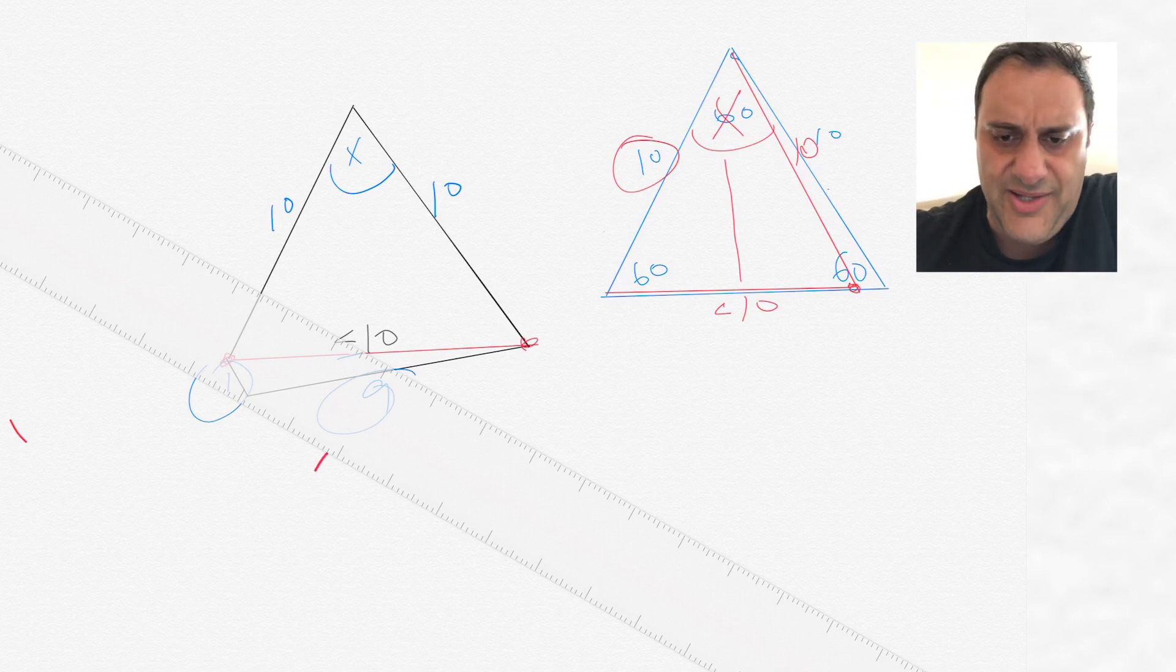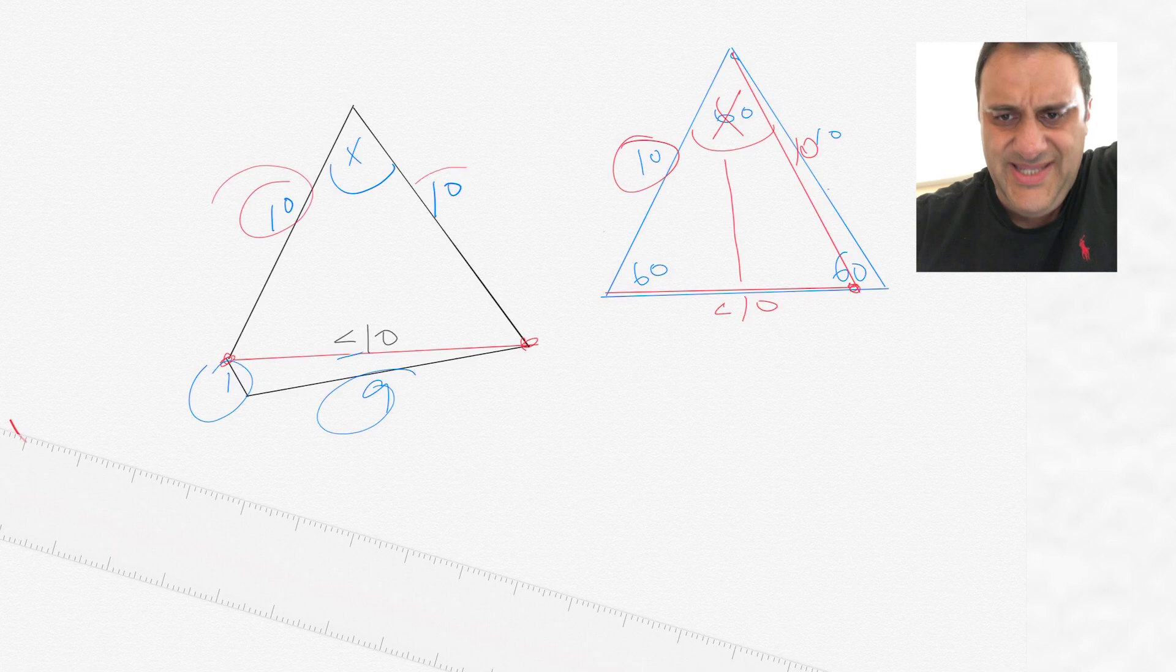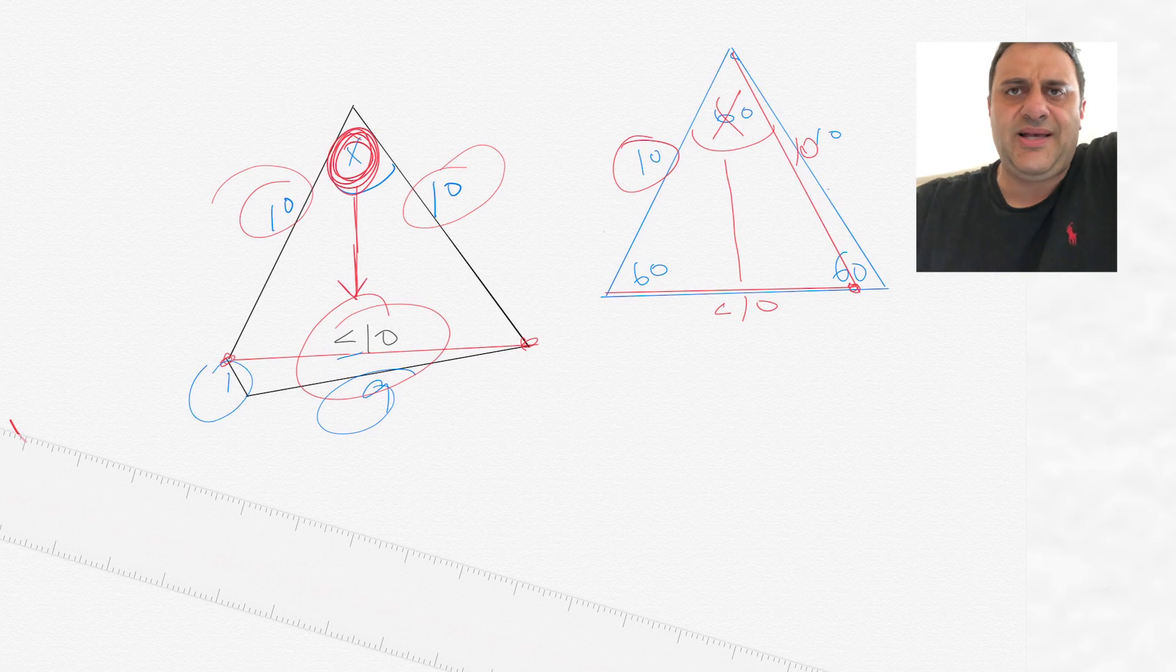So here, if we have 10, 10, and then this one's a little bit less than 10, then this angle here which opposes that x, because that opposes the smallest side of the triangle, that's going to be the smallest angle.